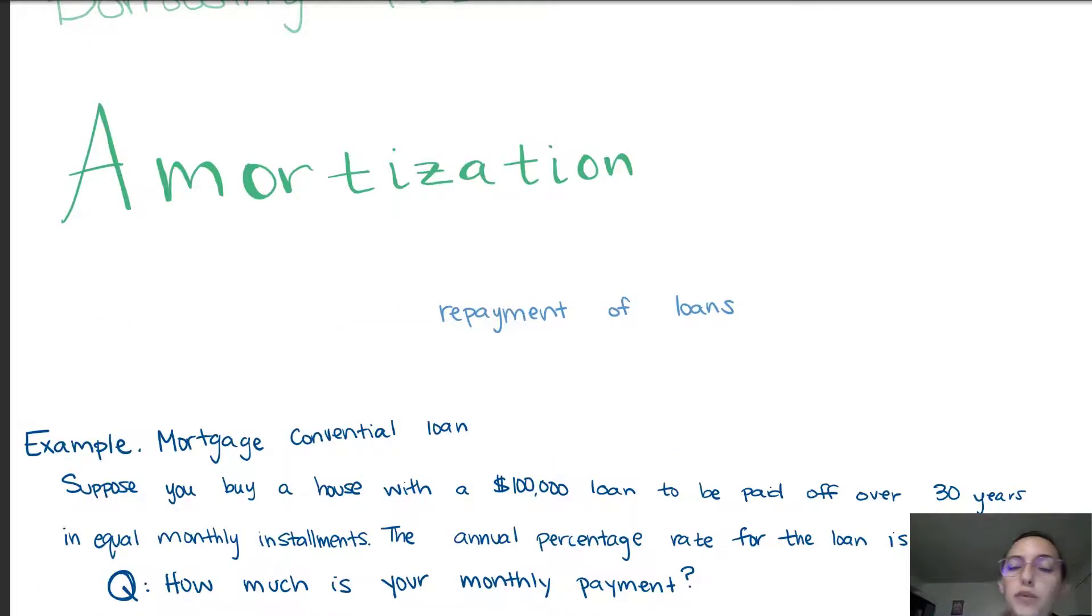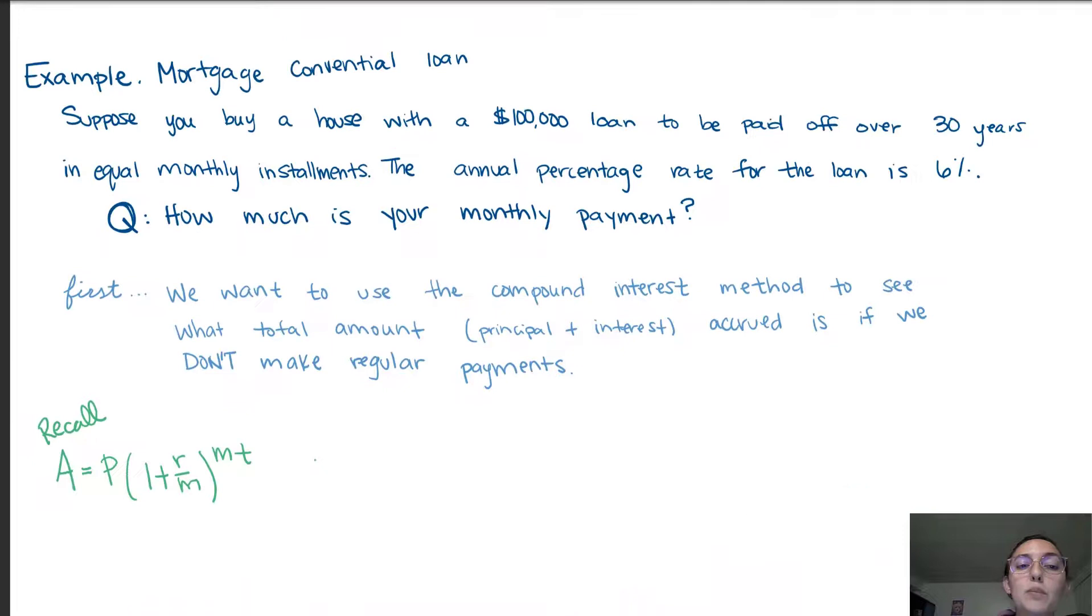We're going to derive a rule for amortization and to do this we're going to look at an example that will guide us through the derivation. The example is of a conventional loan for mortgages. We saw this example in the previous video. We're taking out a $100,000 loan to be paid off over 30 years with an APR of 6%. The question we want to answer is how much is your monthly payment.